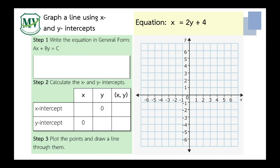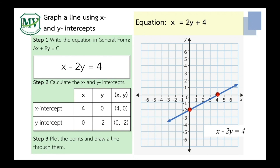Problem number 3: graph x equals 2y plus 4. Write the equation in general form: x minus 2y equals 4. Calculate the x and y intercepts. If y equals 0, x equals 4. If x equals 0, y equals negative 2. Plot the points on the Cartesian plane: x-intercept (4, 0) and y-intercept (0, negative 2). Connect the points with a straight line. This is the line of x minus 2y equals 4.